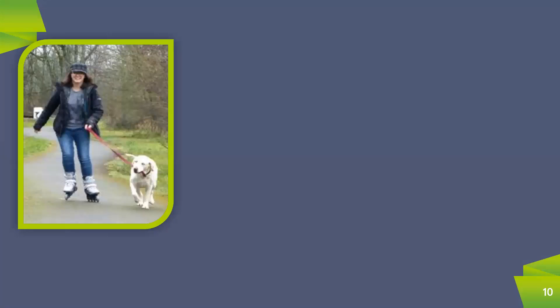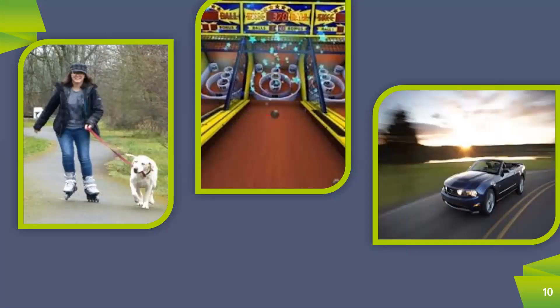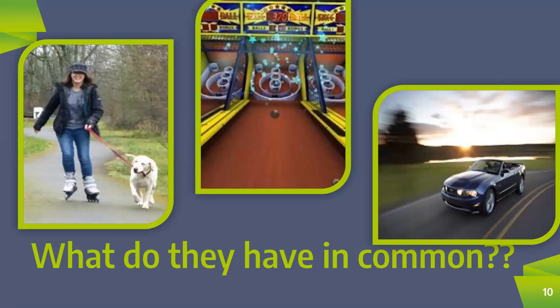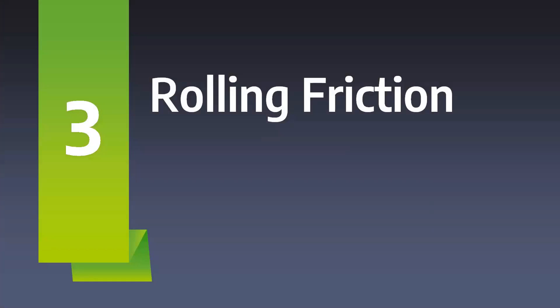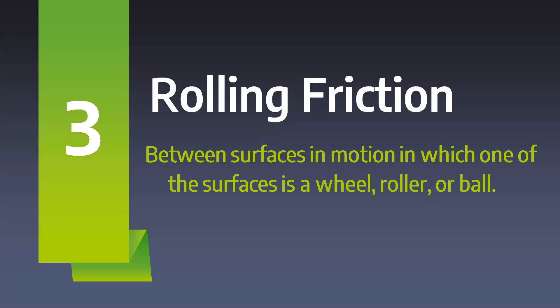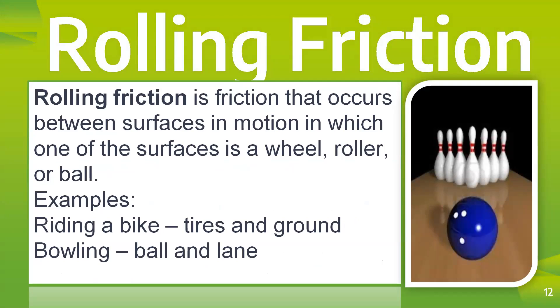In the second and third pictures, you can see one thing very common — they have a wheel or a ball, a spherical surface. When these spheres or wheels are moving, their type of motion can be called as rolling motion. Friction experienced between surfaces in motion in which one of the surfaces has to be a wheel, a roller, or a ball is called rolling friction. While riding a bicycle, the tires and the ground will be experiencing rolling friction. While you play bowling, the ball and the lane will be experiencing rolling friction.